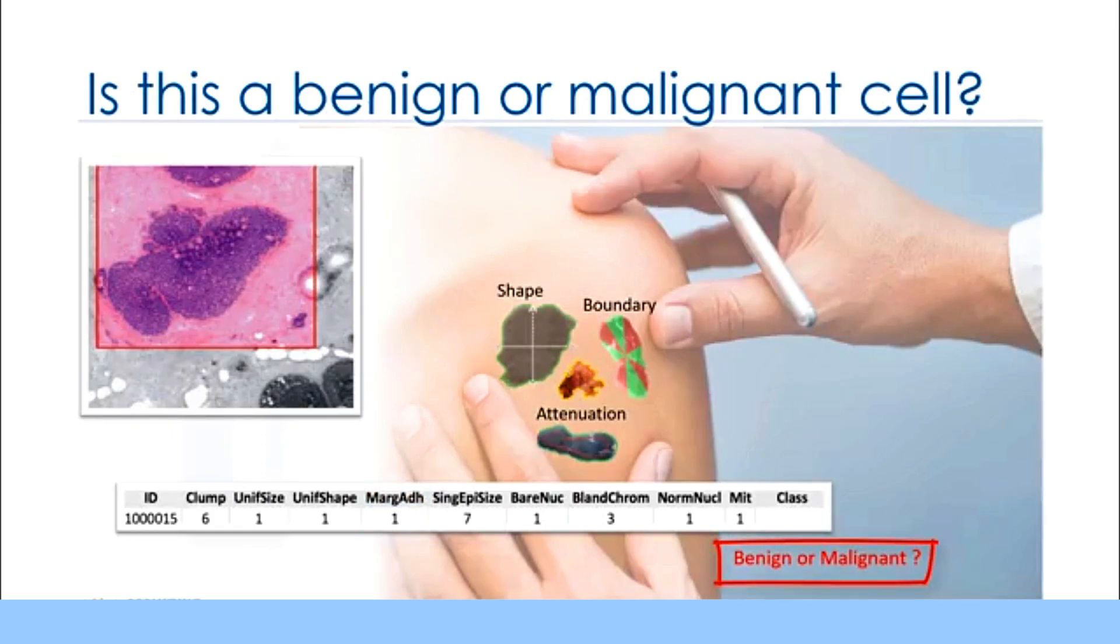In contrast with a benign tumor, a malignant tumor is a tumor that may invade its surrounding tissue or spread around the body, and diagnosing it early might be the key to a patient's survival. One could easily presume that only a doctor with years of experience could diagnose that tumor and say if the patient is developing cancer or not, right?